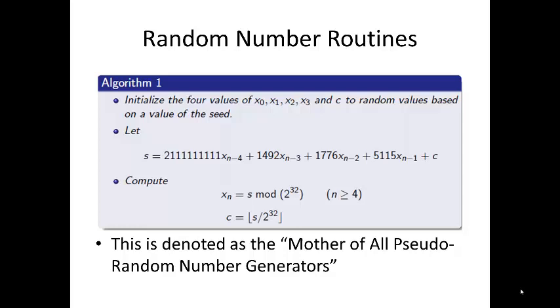We initialize four values, x0, x1, x2, x3, and c to random values based on the value of the seed. We let s equal the following, and compute xn is equal to s mod 2 to the 32. And c is the floor, s divided by 2 to the 32. This one is actually denoted as the mother of all random number generators, invented by George Marsaglia.